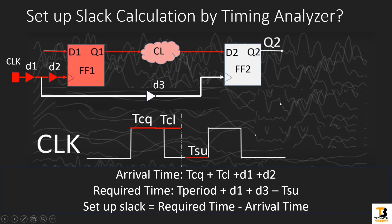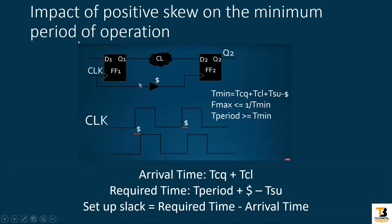In a previous video I explained the impact of skew in detail with an animation. Here is the crux: for positive skew, the clock applied to flip-flop 2 is delayed by delta compared to flip-flop 1. With positive skew, the available capture window becomes T-period plus delta, so we have more margin. T-minimum equals TCQ plus TCL plus T-setup minus delta. Arrival time is still TCQ plus TCL, and the required time becomes time period of operation plus delta minus setup time of the second flip-flop. Slack equals required time minus arrival time.